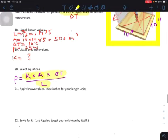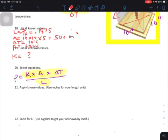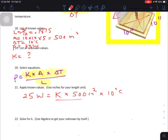Apply the known values, number 21. So let's just go ahead and do that. 25 watts equals thermal conductivity times the area 500 inches squared, times the temperature difference 10 degrees Celsius, divided by the thickness 0.1875 inches.